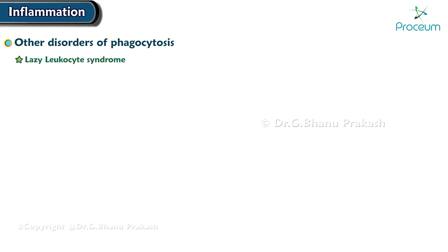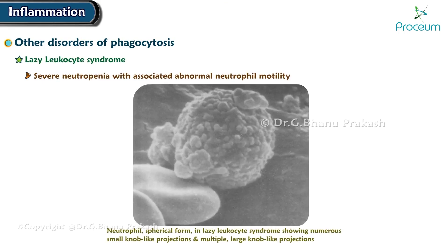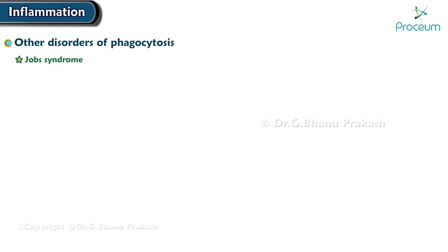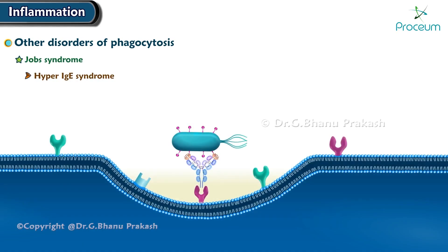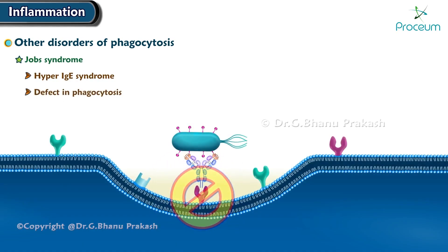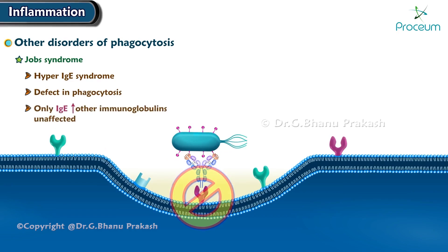Other disorders affecting phagocytosis include lazy leukocyte syndrome, a severe neutropenia with associated abnormal neutrophil motility. Job syndrome, also known as hyperimmunoglobulin E syndrome, is characterized by a defect in phagocytosis. In Job syndrome, only immunoglobulin E is elevated while other immunoglobulins remain unaffected.